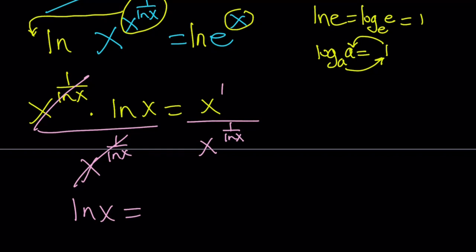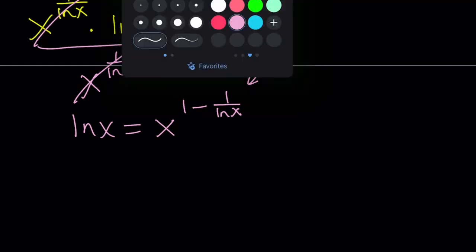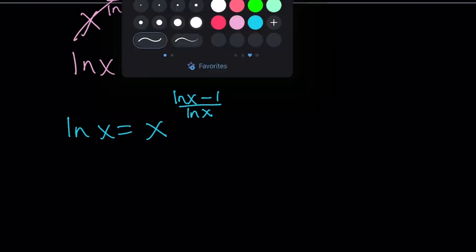Since we're dividing two powers with the same base we subtract the exponents, giving us x to the power 1 minus 1 over ln x. This looks complicated, but let's make it more manageable. We can make a common denominator and write the exponent as (ln x minus 1) over ln x. Now let's take ln of both sides to get rid of the variable exponent.